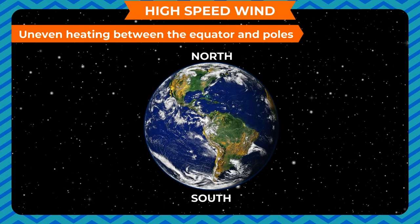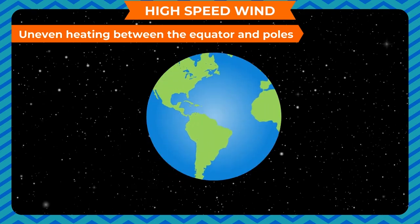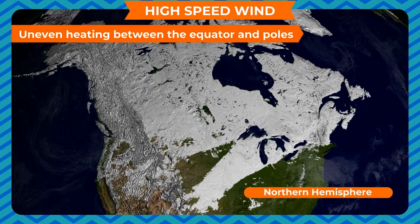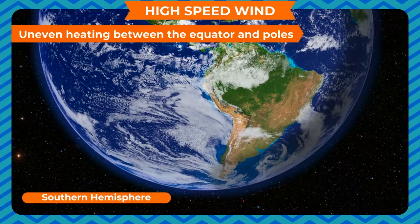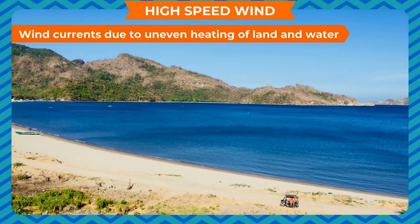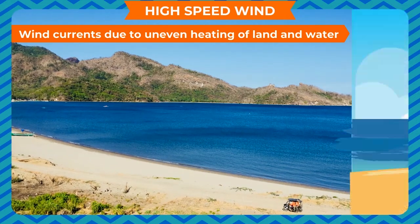If the earth stood still, these winds would blow directly in the north-south direction. It is due to the rotation of the earth that winds in the northern hemisphere swerve to their right, and winds in the southern hemisphere swerve to their left. This also causes wind currents due to uneven heating of land and water.